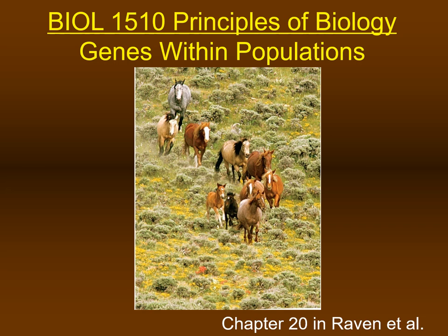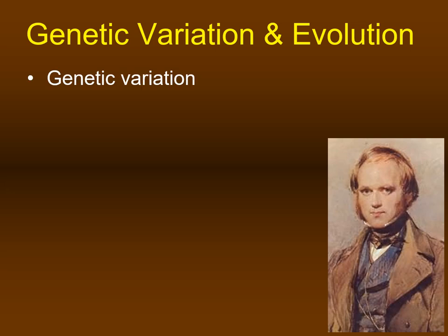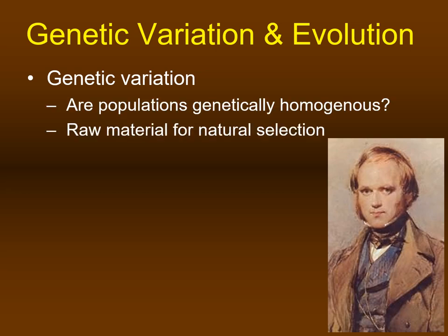In this video, we're going to discuss the behavior of genes within populations and the origin of species. Genetic variation in populations plays a critical role in the process of evolution. Populations are generally genetically heterogeneous; different organisms within the population have different genetic makeup. This genetic variation is critical for evolution because it provides the raw material for natural selection.